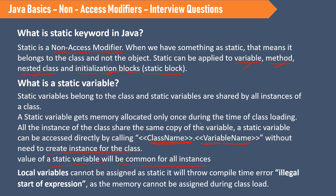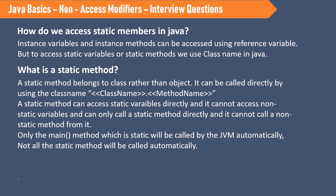To summarize static variables: they belong to the class and are shared by all instances. A static variable gets memory allocated only once during class loading. All instances share the same copy of the variable. A static variable can be accessed directly within the class, or using class name dot variable name from a different class. Local variables cannot be static — if you try to assign them as static, you will get the error 'illegal start of exception'.